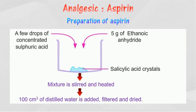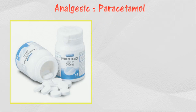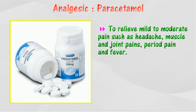Aspirin can be prepared in the laboratory. The figure shows a simplified method of preparing aspirin in the laboratory. The white crystals of aspirin are formed from the reaction between salicylic acid and ethanoic anhydride, as shown in the following chemical equation.